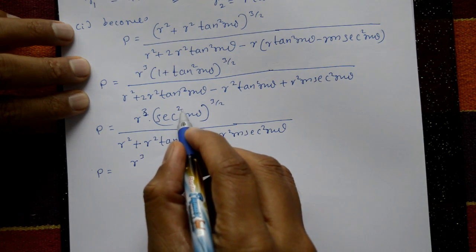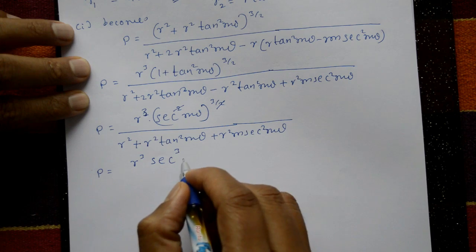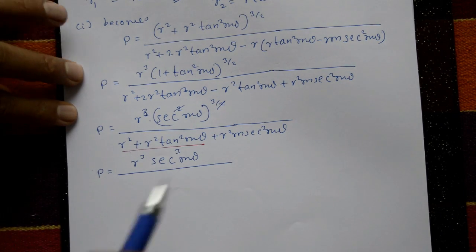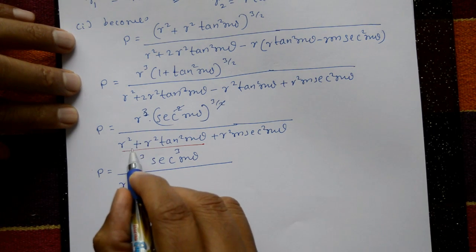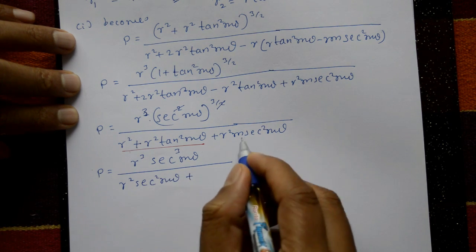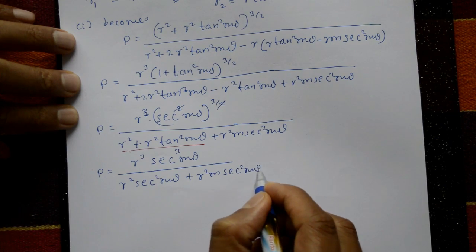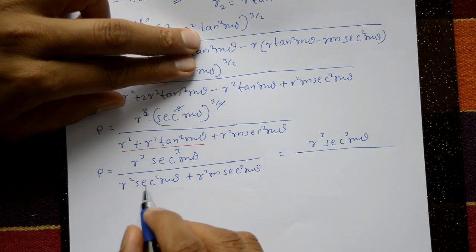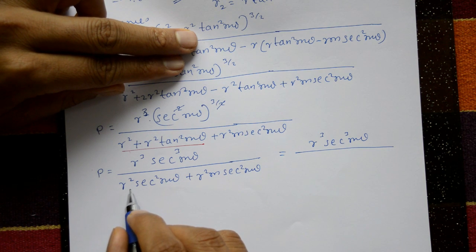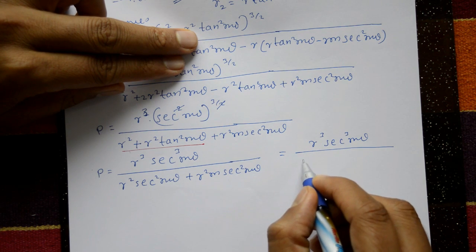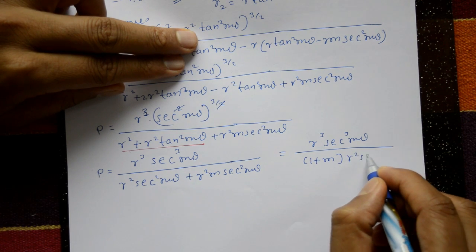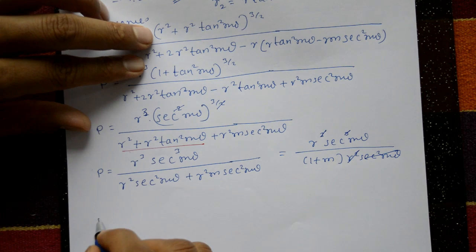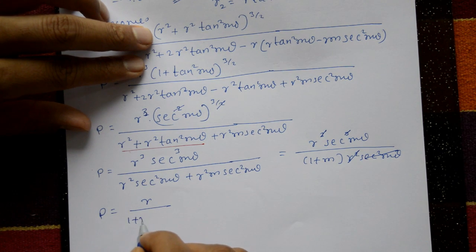Therefore ρ = r²·sec³(mθ) / [r²·sec²(mθ)·(1 + m)]. The r² and sec²(mθ) cancel, giving ρ = r·sec(mθ) / (1 + m). Since sec(mθ) = 1/cos(mθ), we have ρ = r / [(1 + m)·cos(mθ)].